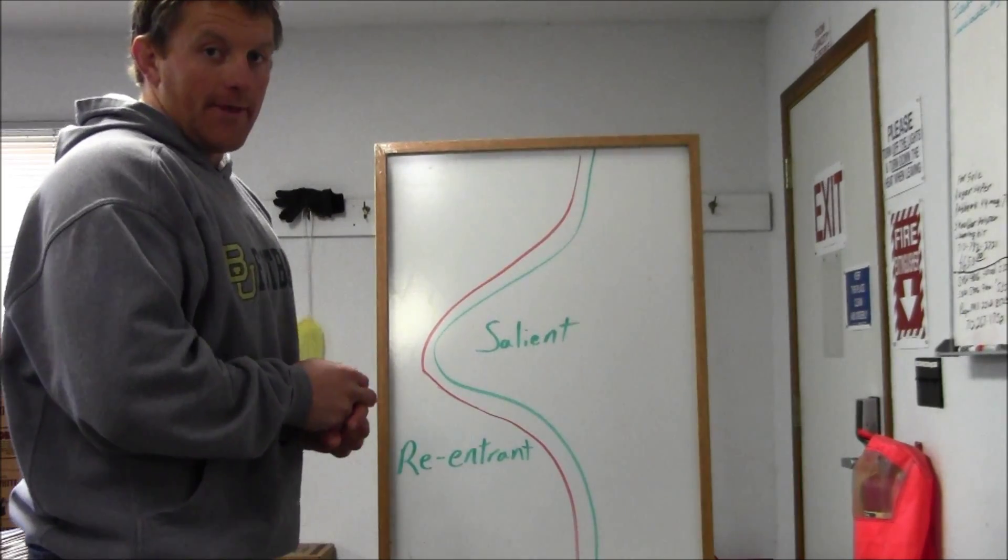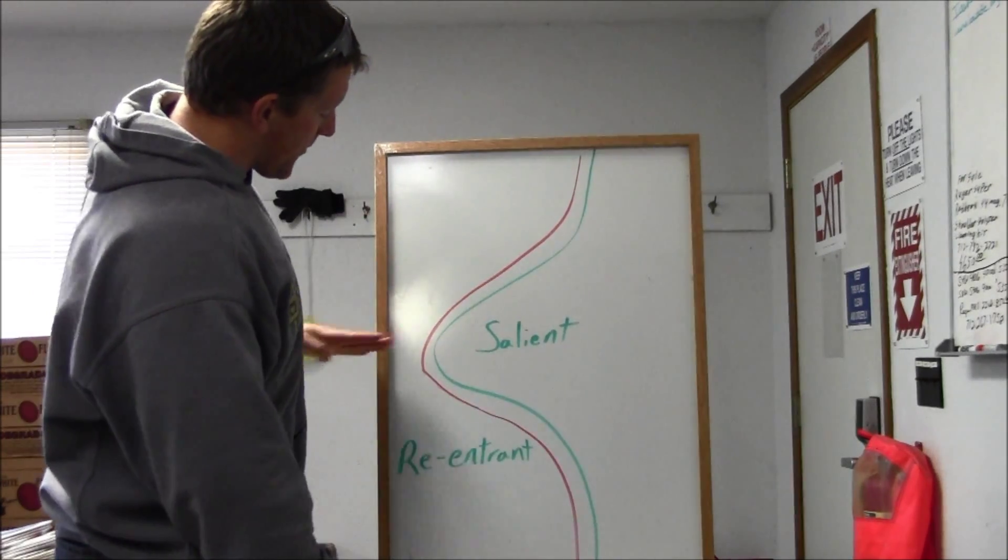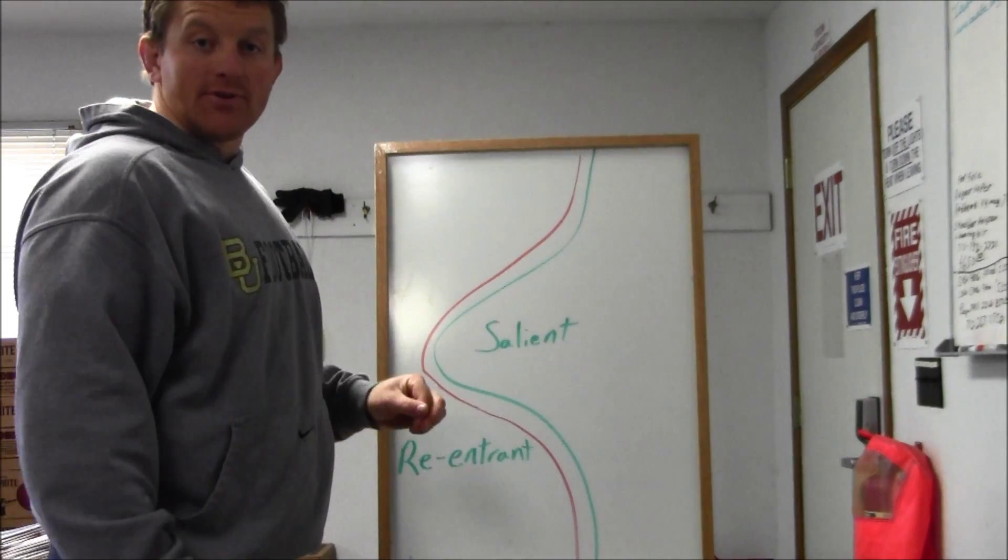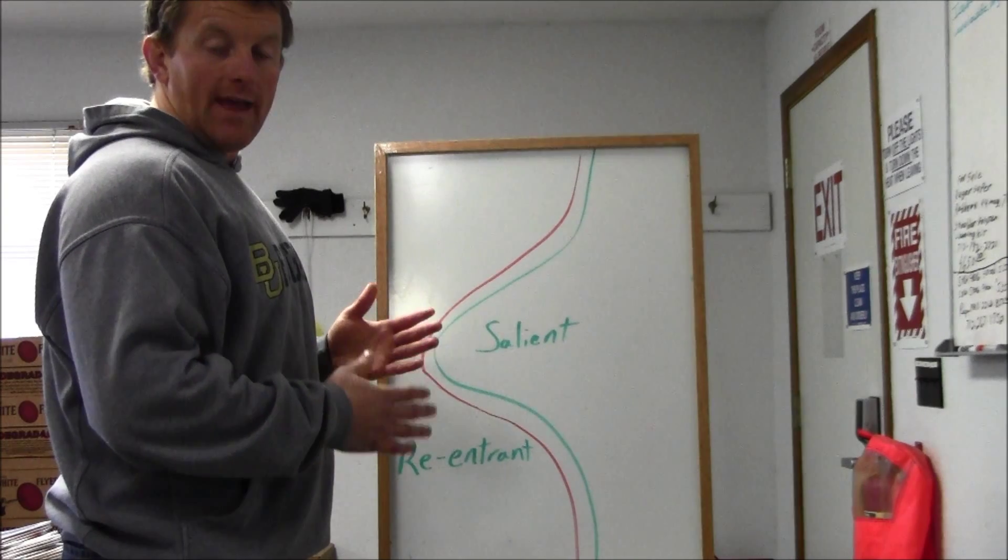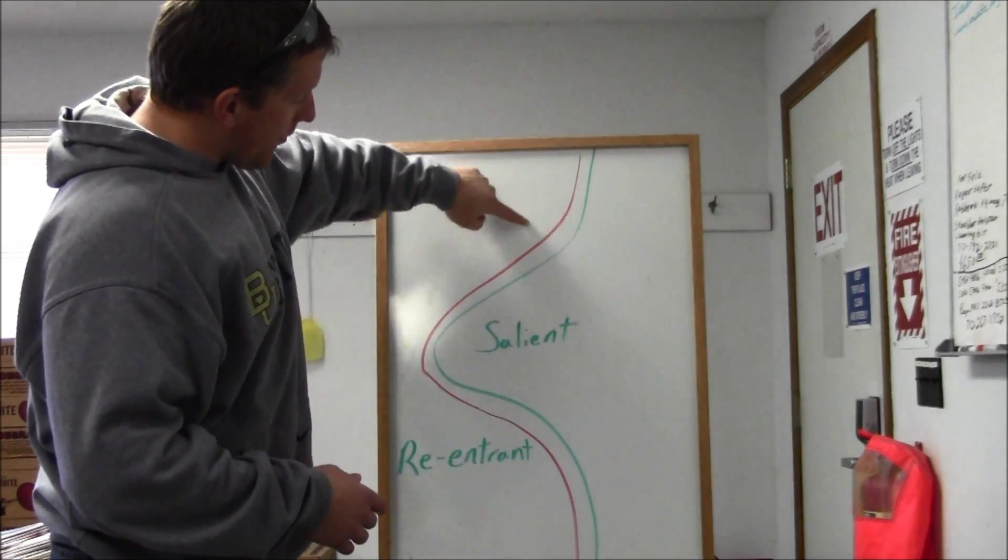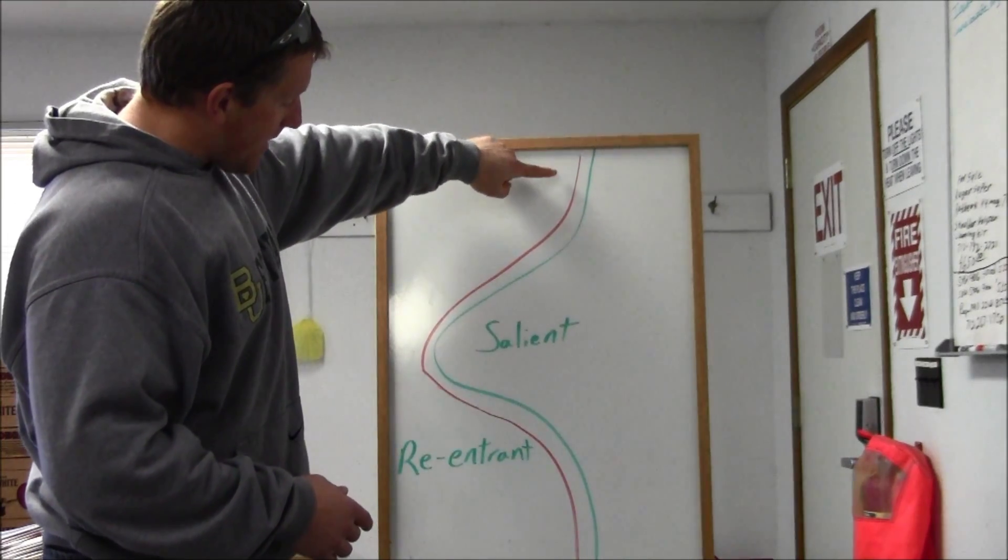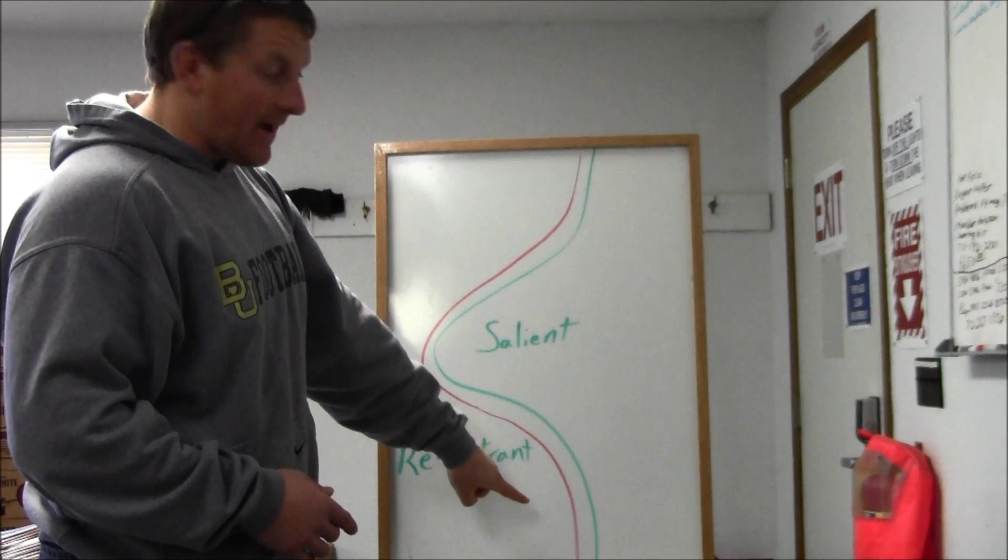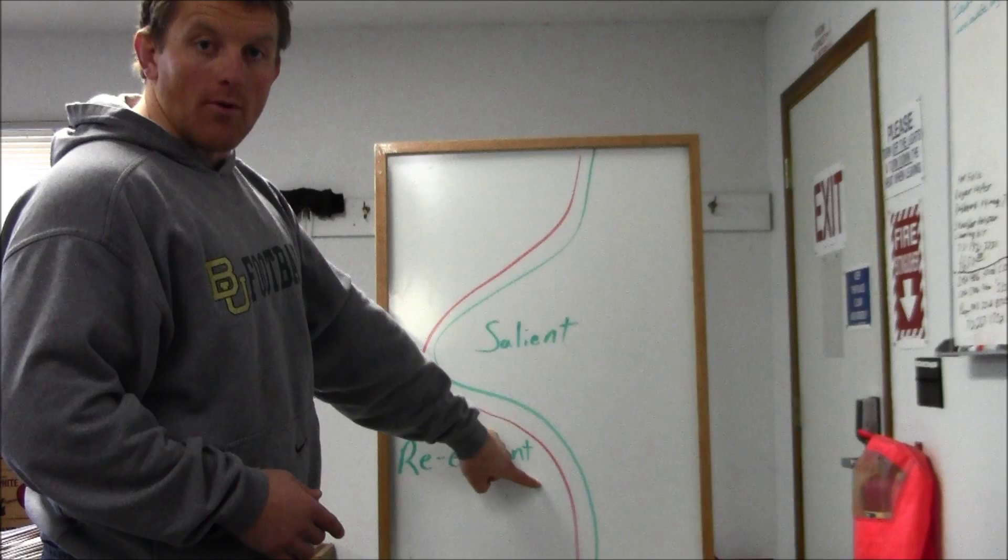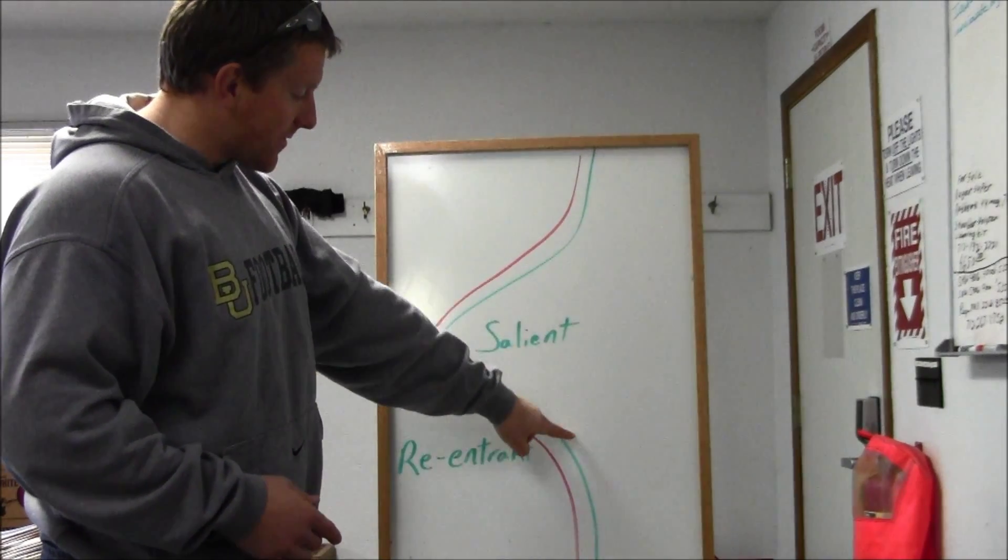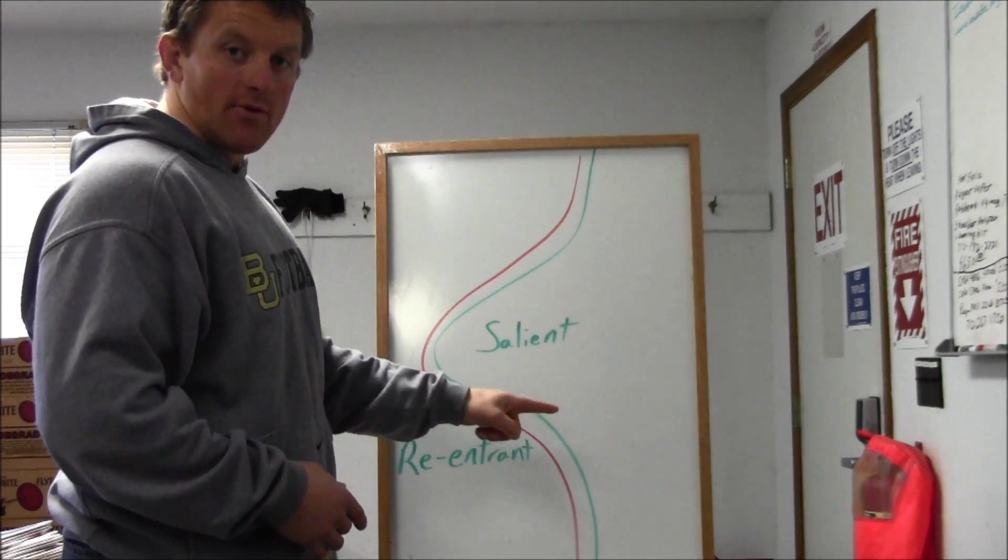Salients mean a couple of things. One, salients are always obvious choices for attack because they can be attacked from three positions, straight on and from the two wings. And they're also very bad positions for the enemy to have in their lines because if I have forces here and I have forces here and I want to supply them, I cannot take a direct route to move troops, to move supplies, anything like that. I have a very long line of supply around there. Whereas the enemy, if he wants to supply troops in either of these two points, he more or less has a very short distance, potentially a straight line between those two.